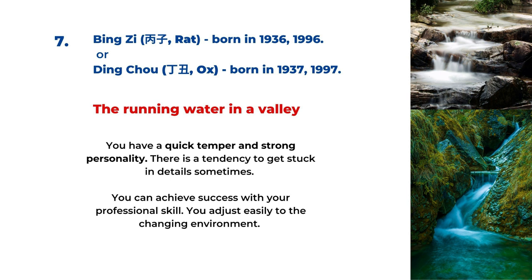The seventh type is for the Bing Zi year and Ding Chou year — that's 1936, 1937, 1996, and 1997. It's called the running water in a valley. This is a water element. If this is your birth year, you have a quick temper and very strong personality, and there is a tendency to get stuck in details sometimes. You can achieve success with your professional skills, and just like water, you adjust easily to the changing environment.